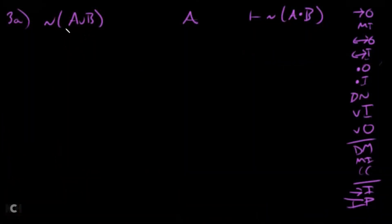This is 3A. We've got squiggle A wedge B — that would be like saying neither A nor B. And we're trying to get: you can't have both A and B. So these are the rules we've got in play at this point.